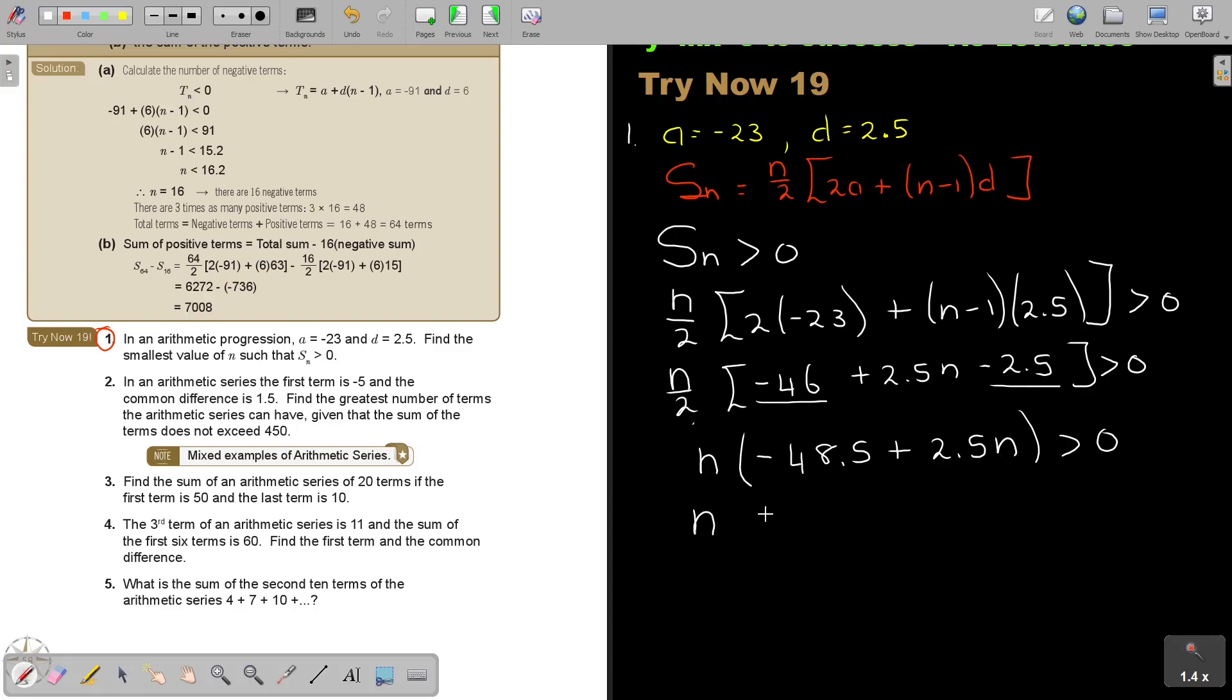I just go N is bigger than 0 or negative 48.5 plus 2.5N is bigger than 0. N is bigger than 0 or if I simplify this, it's 2.5N is bigger than 48.5. And if I divide, I get N is going to be bigger than 19.4.